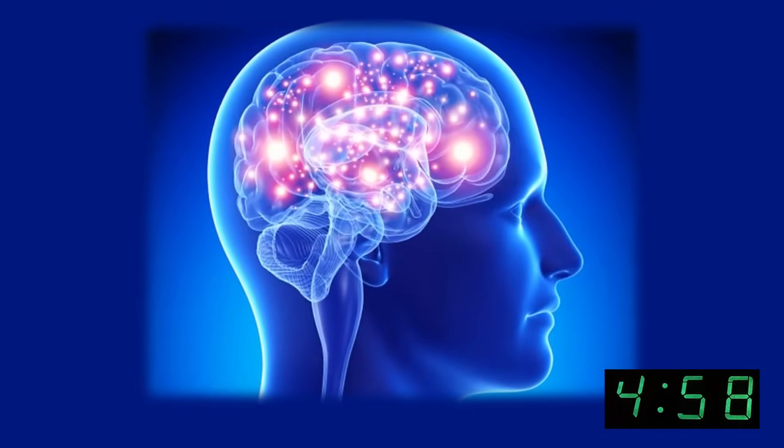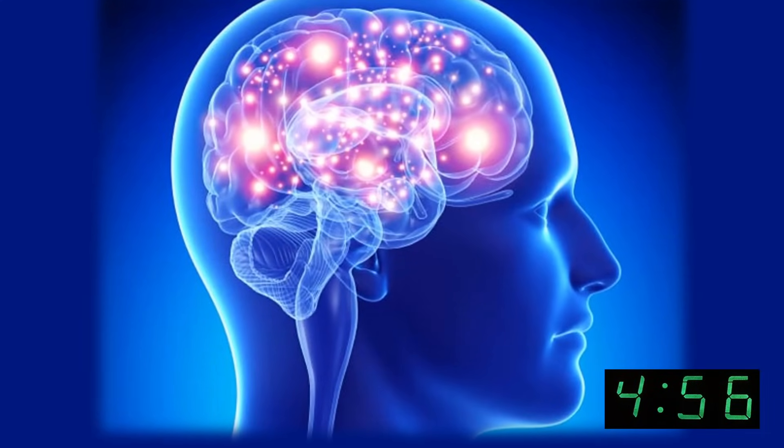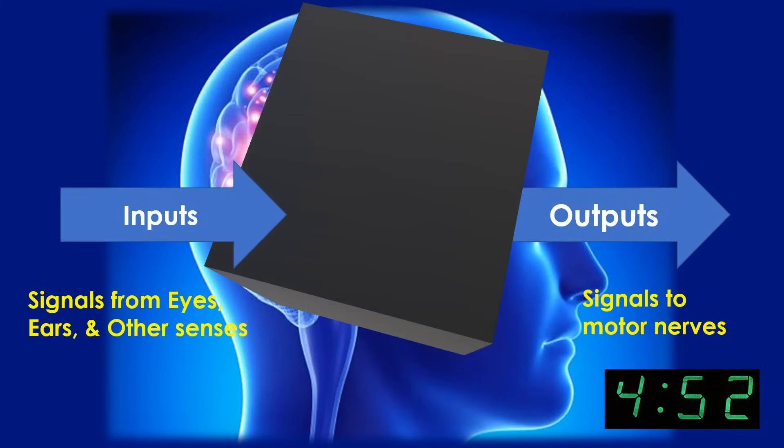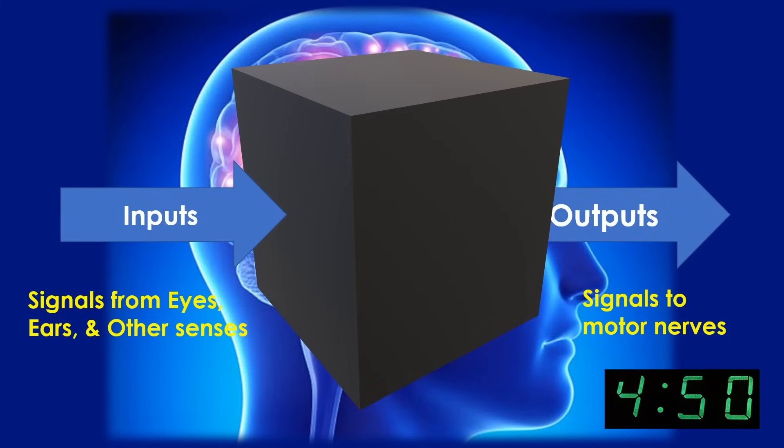The human brain is an amazing system capable of doing many things, even understanding how the brain works. Think of your brain as a black box with inputs and outputs. Inputs consisting of signals from your eyes, ears, and other senses, and outputs being motor nerves which control your body.